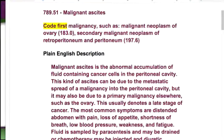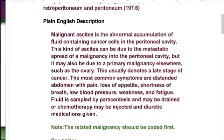Fluid is sampled by paracentesis — they go in and draw some of it out — and may be drained, or chemotherapy may be injected and a diuretic medication given, because your body can actually absorb this fluid. As a coder, you may not know a lot about ascites, but when you're coding you need to know all of the symptoms associated with it, because you usually have to draw parallel lines. These are things you kind of need to know about. The related malignancy should be coded first.